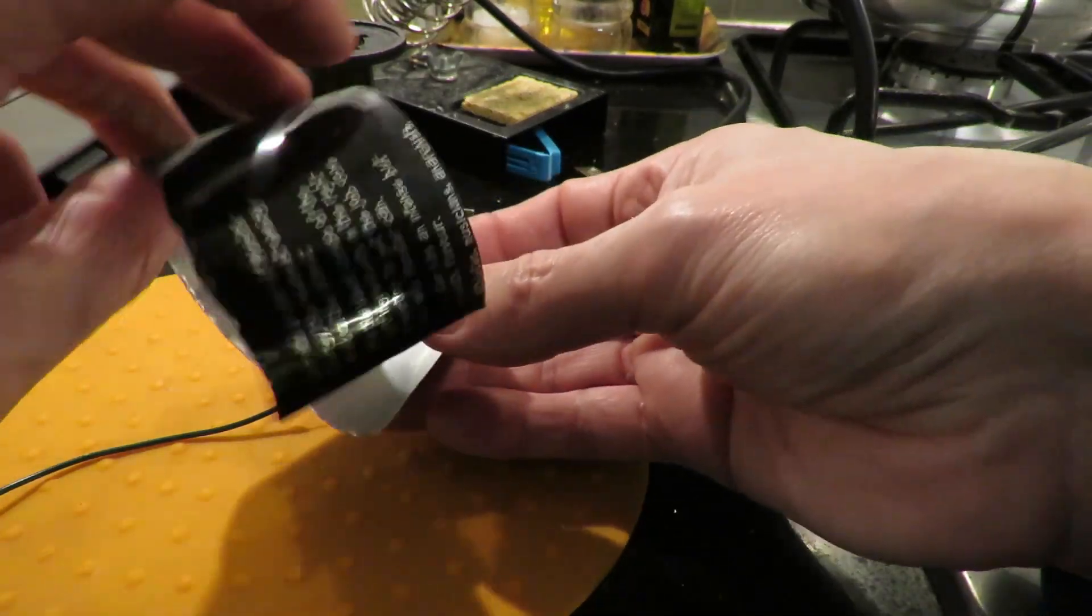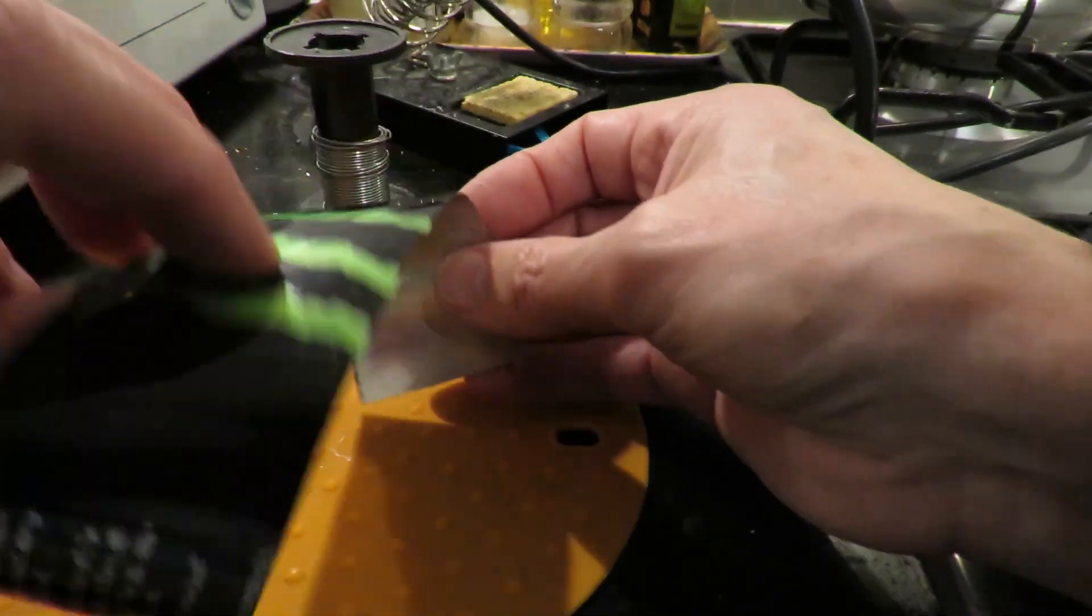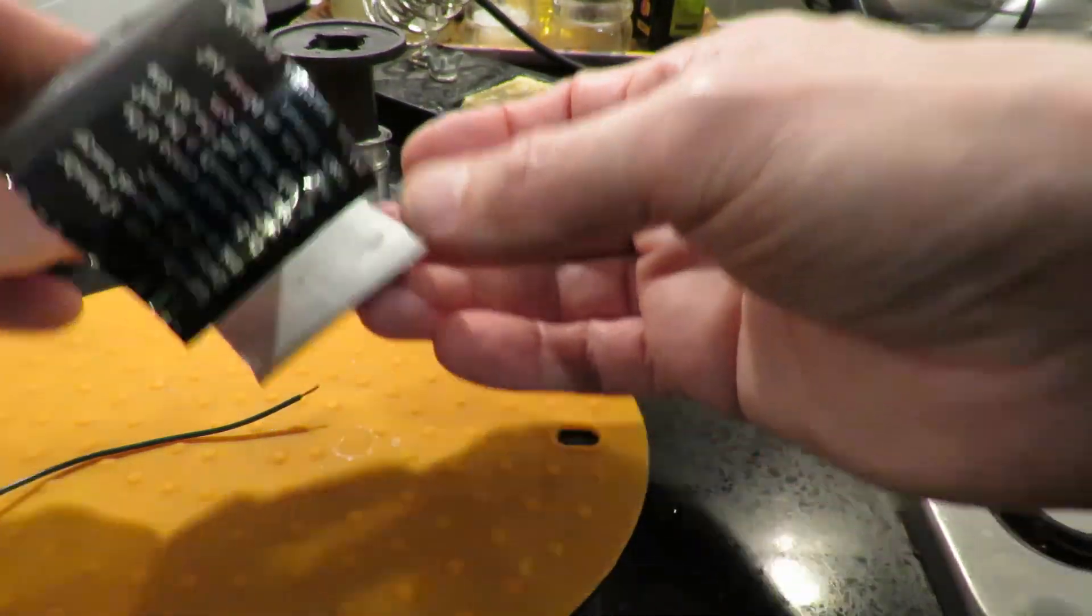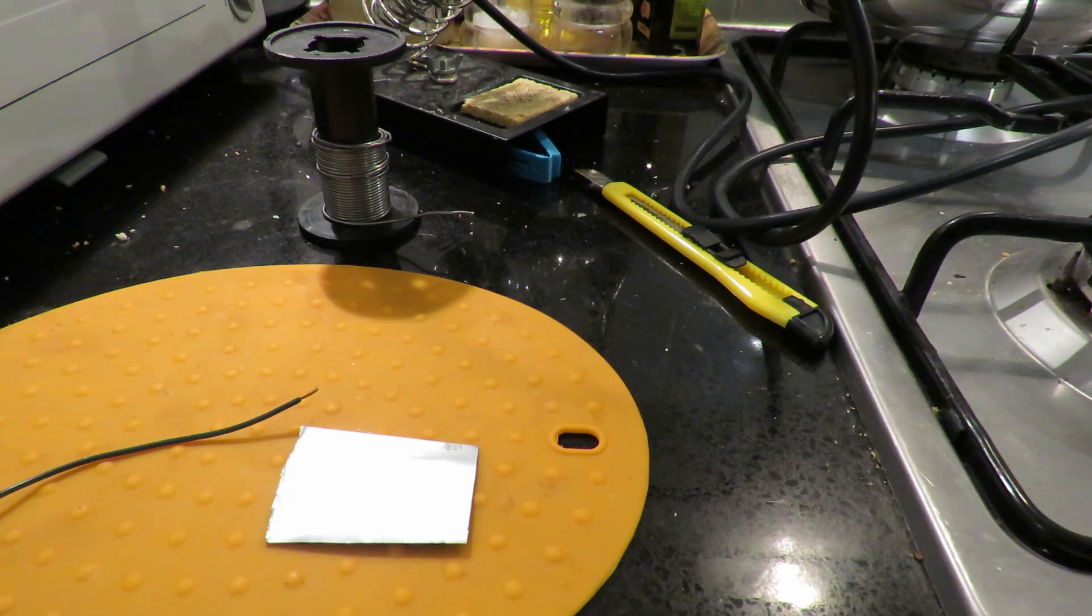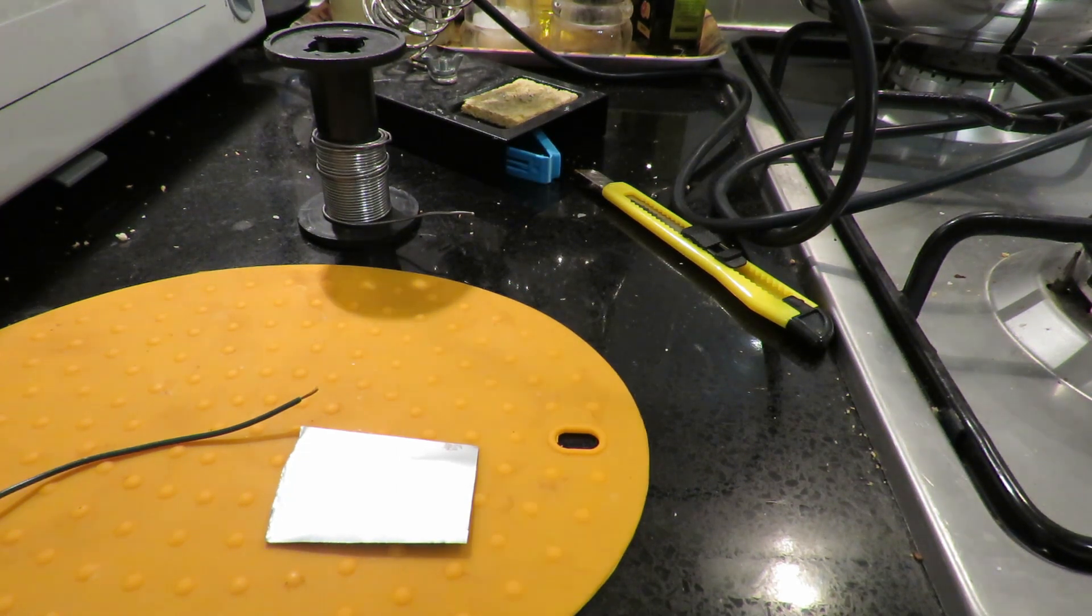I'll cut a square off of this so it's not all bouncing around and now I'll try and solder onto it. As I say, the theory is you clean it off under oil.